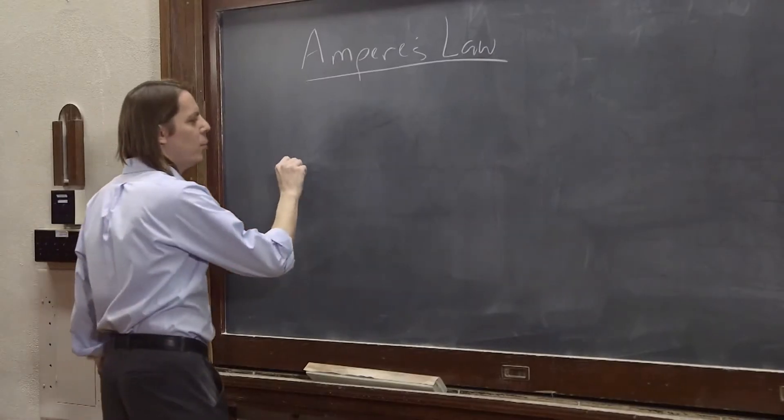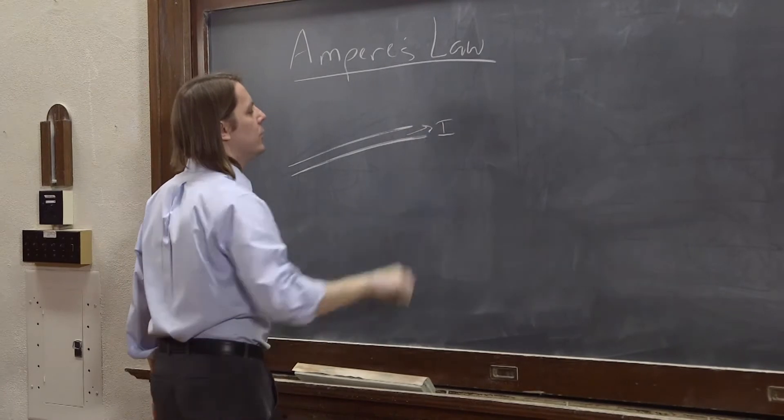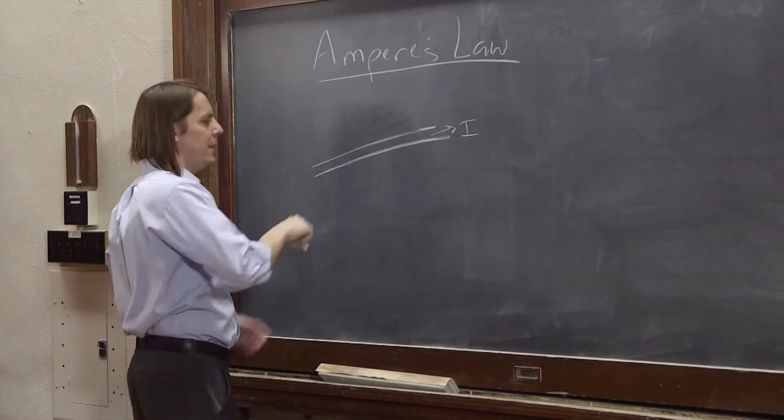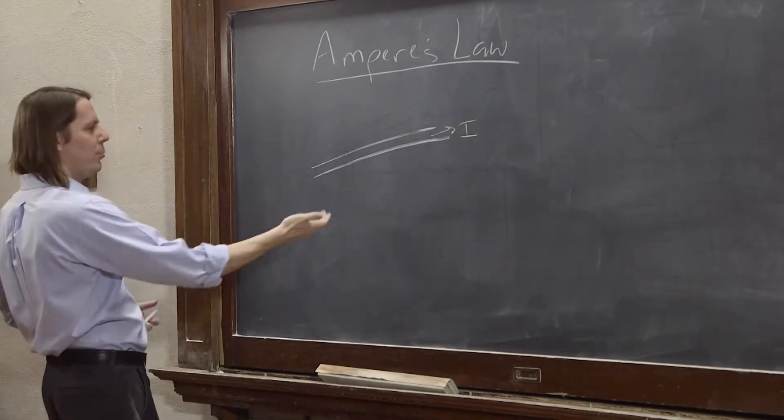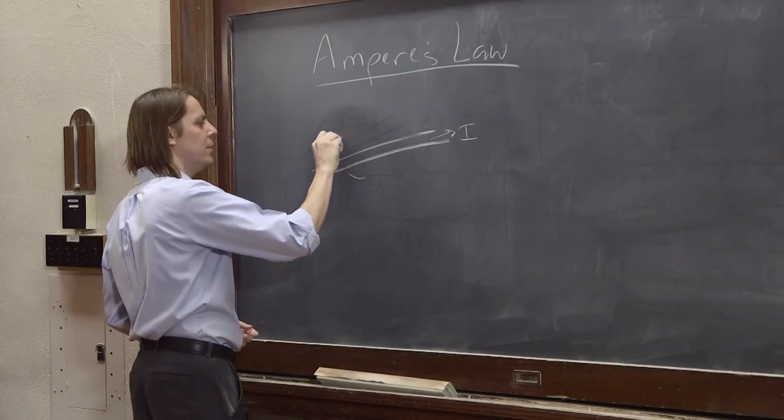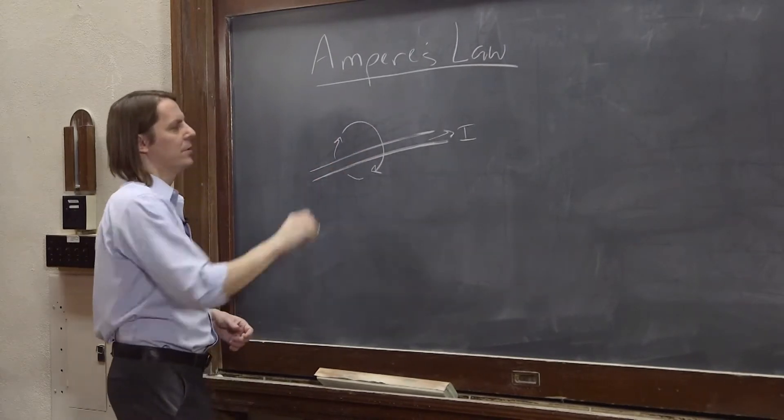So remember, if we have a wire and it's carrying some current, we know that it makes a magnetic field. And the magnetic field, we follow the right-hand rule, it's going to go behind the wire and out in front. So I'll kind of draw it like this. The B field is going to kind of go like that and come back around like this.